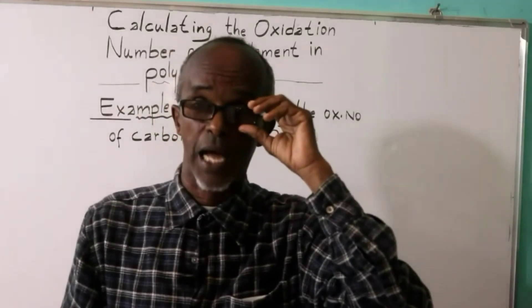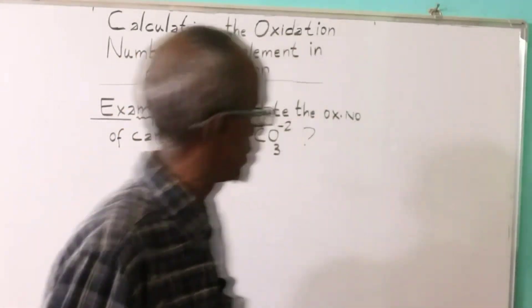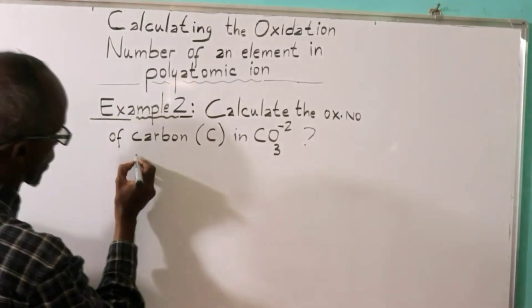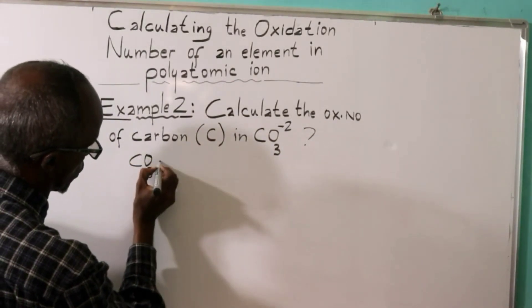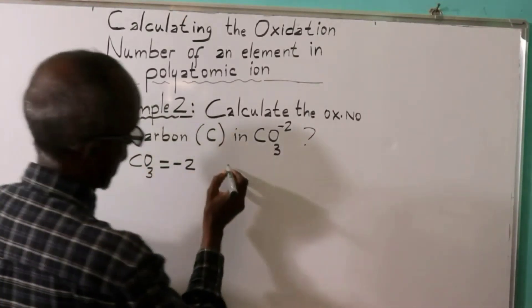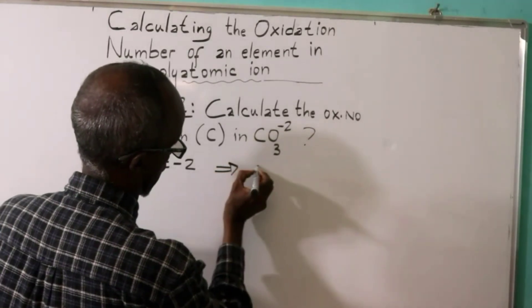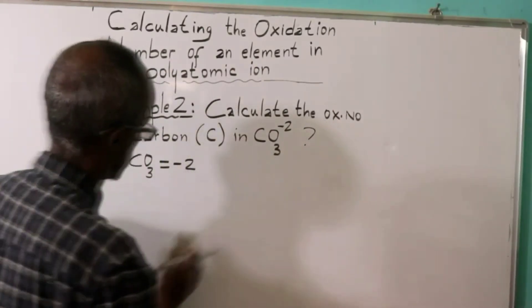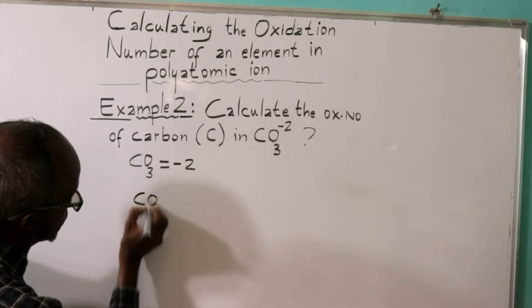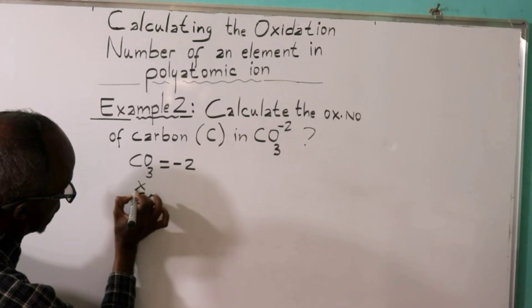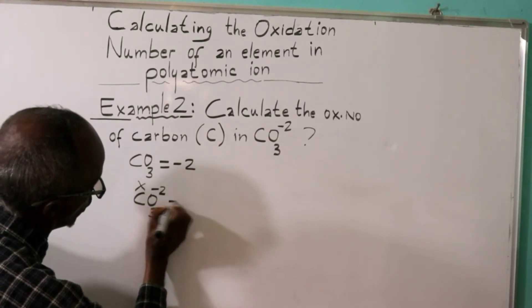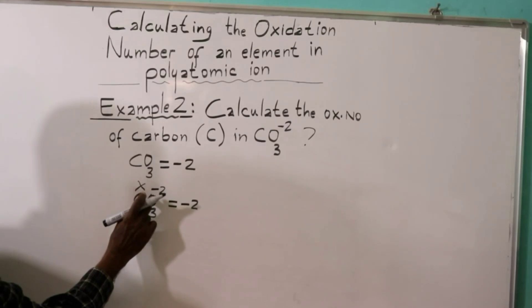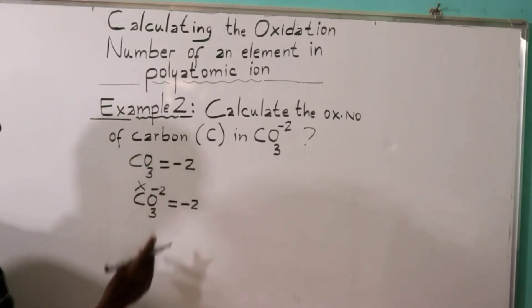First step: Carbon is equal minus two. The oxidation number of oxygen is negative two. One times x plus three times minus two (minus six) is equal minus two.